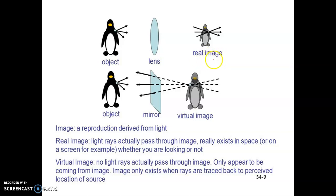In a virtual image, light rays do not actually pass through the image — they only appear to be coming from the image. The image only exists when the rays are traced back to the perceived location of the source. This distinguishes a virtual image from a real image.